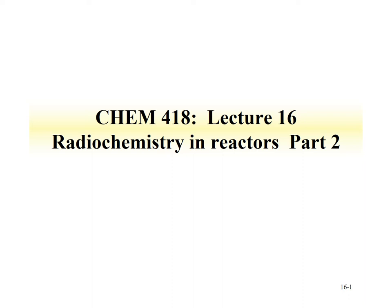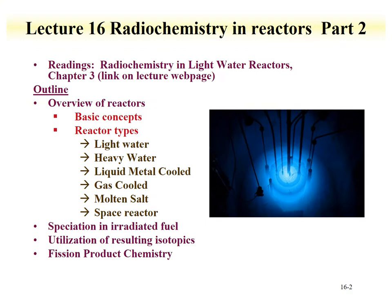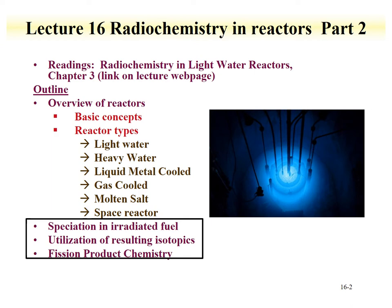Welcome to the second part of Lecture 16 for Chemistry 418. This lecture describes the radiochemistry that occurs in nuclear reactors. In Part 1, we described some basic concepts of nuclear reactors and went over some detail about the different types of reactors. In Part 2, we're going to talk about the speciation of isotopes within irradiated fuel, how information on isotopes can be used to describe behavior of reactors, and then describe some overview of fission product chemistry.